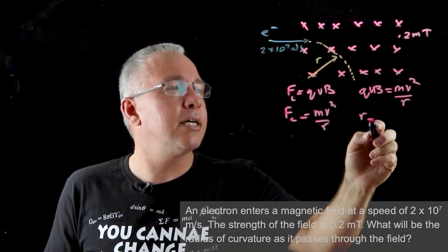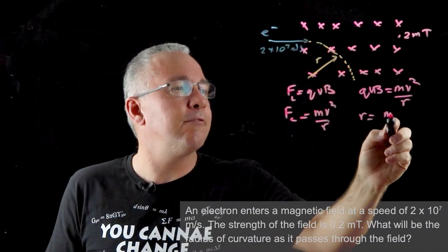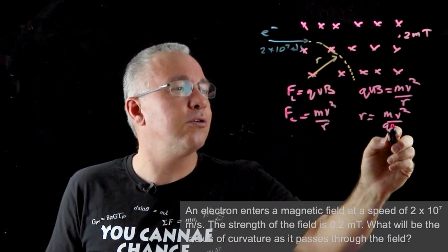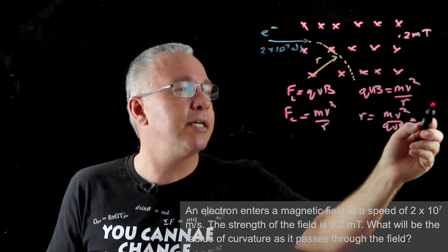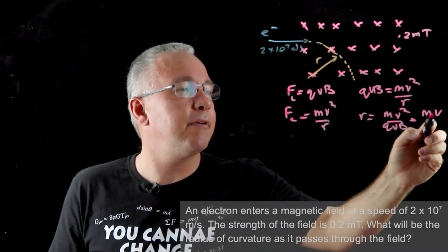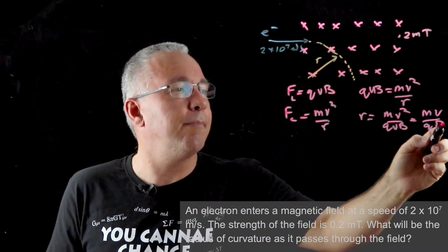Then if I rearrange that I get r = mv²/(QVB), and then what you end up getting here is the v cancels out. So we have r = mv/(QB).